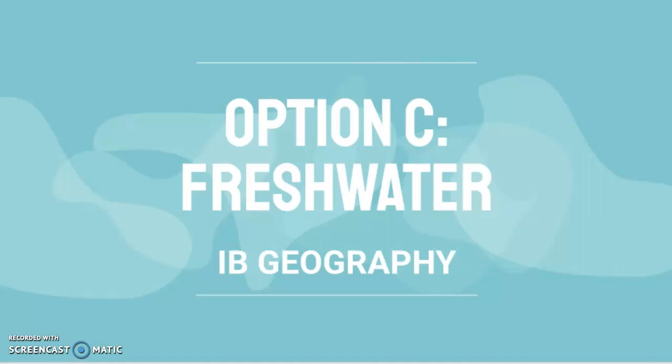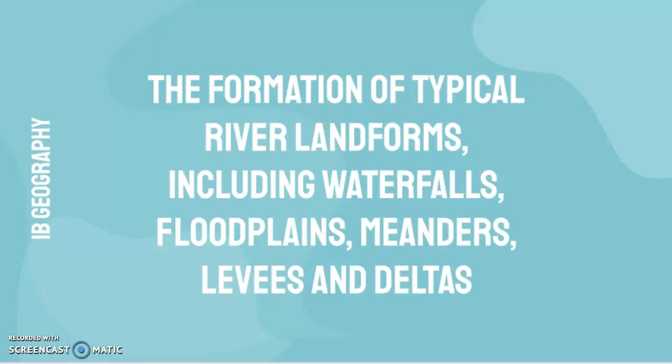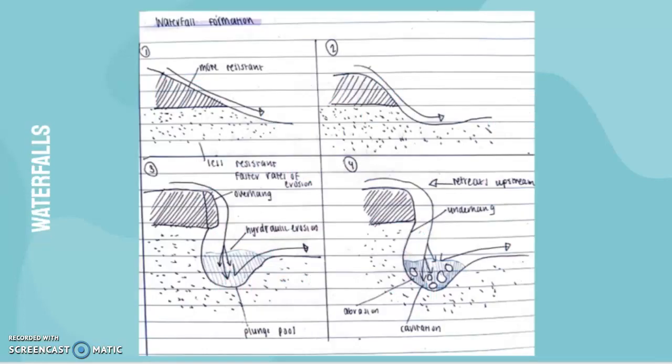This video is about option C freshwater IB Geography and the formation of typical river landforms including waterfalls, floodplains, meanders, levees and deltas. First, waterfalls. This is from my notes, so it's a bit blurry, but it was the easiest way I could explain it.